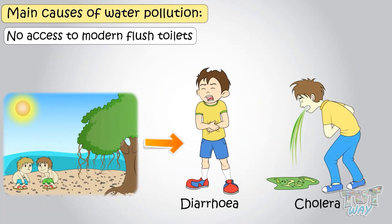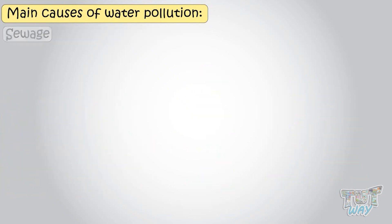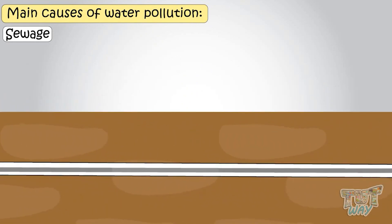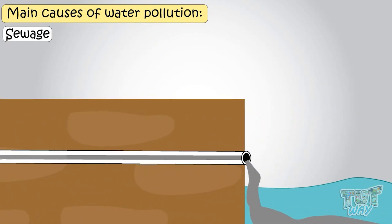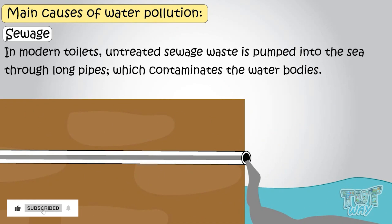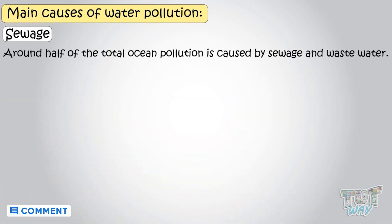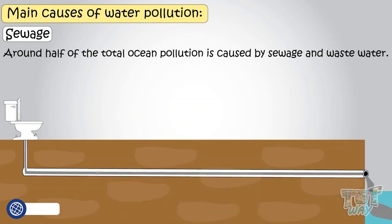But that's not all. Even in modern countries where there are modern flush toilets, sewage is disposed of at some distant place — it can be pumped into the sea or river — so it's also polluting the big water bodies. Sewage waste is pumped into the sea through big pipes, untreated, which contaminates the oceans and seas. Around half of all ocean pollution is caused by sewage and wastewater.